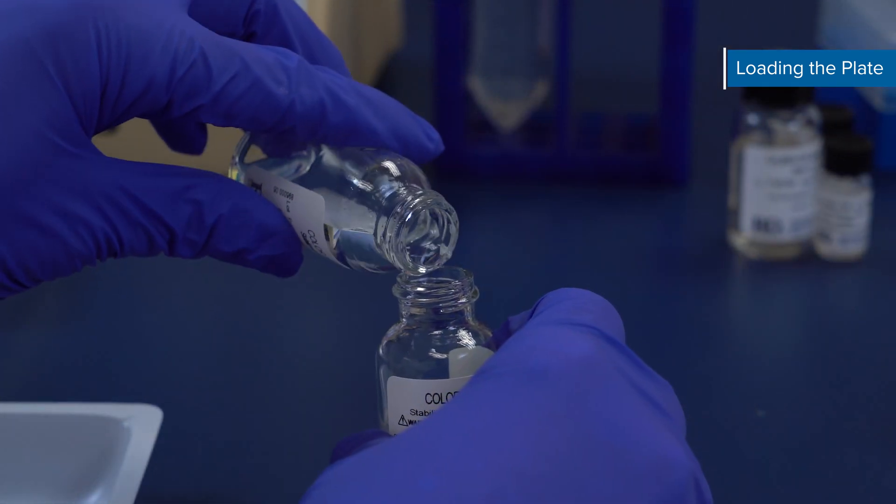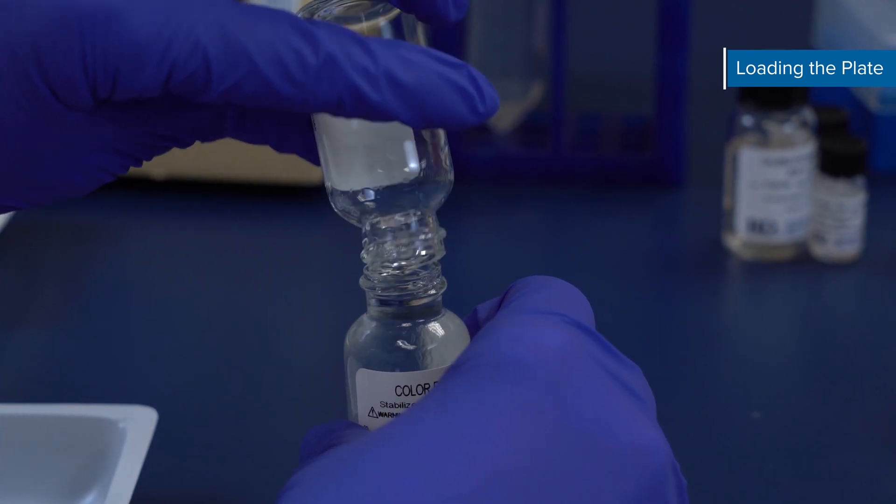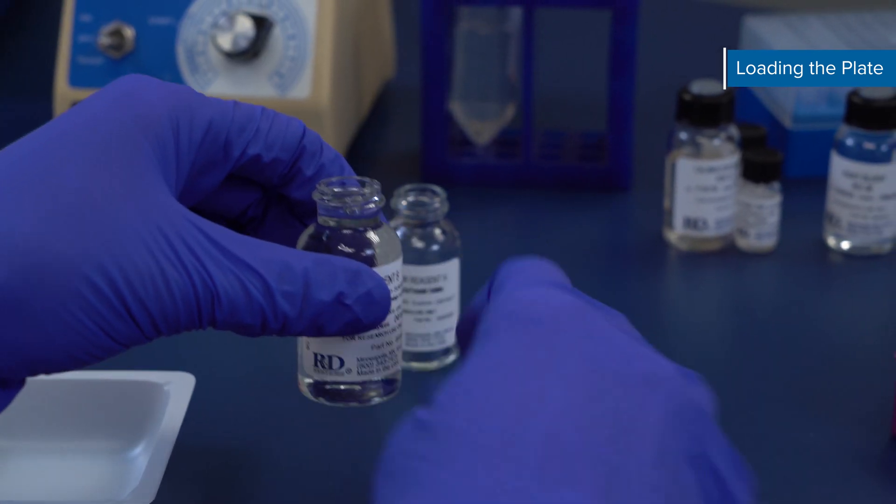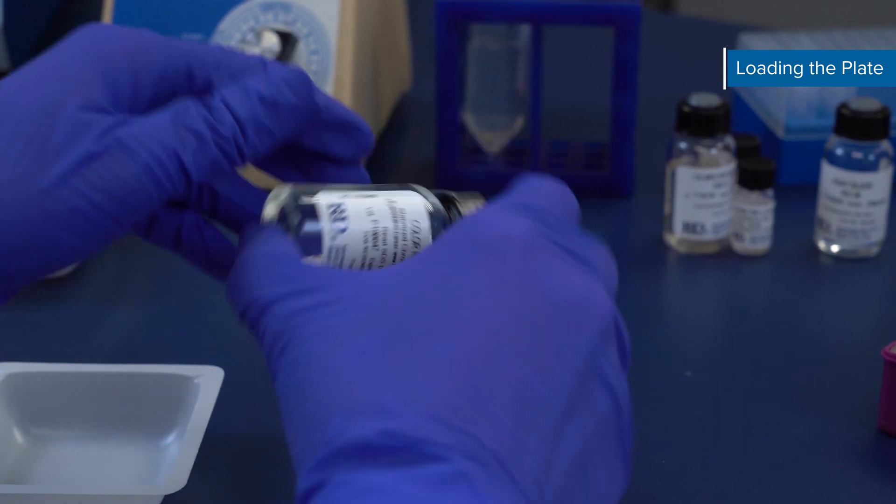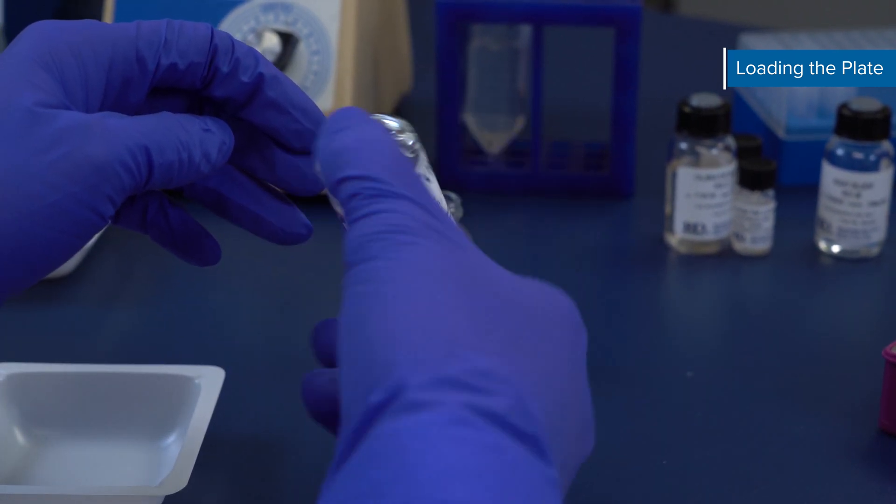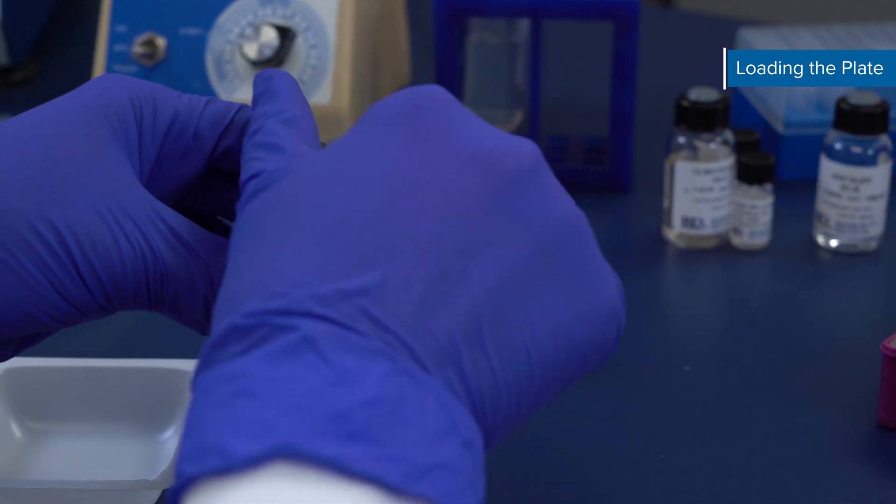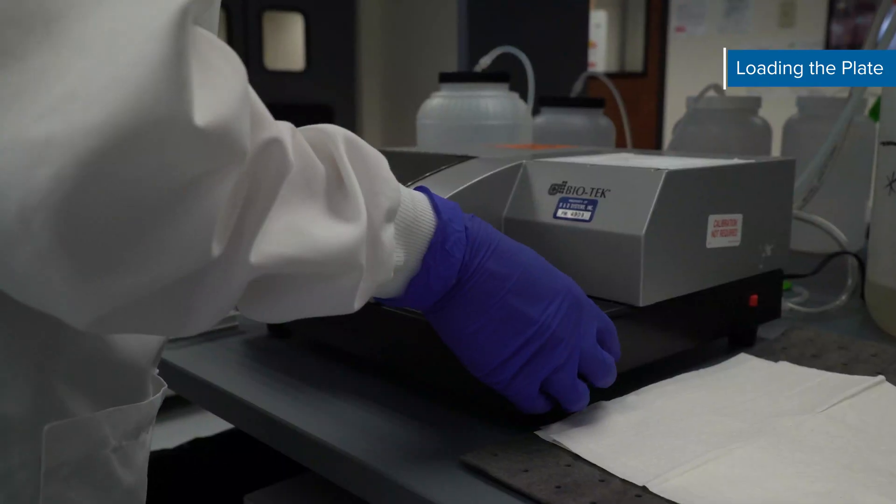In the last five minutes of your incubation, prepare your substrate solution. Mix together color reagents A and B in equal volumes. This substrate solution must be protected from light and used within 15 minutes. It should remain colorless until added to the plate. 100 µL of the solution is required for each well.